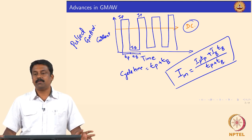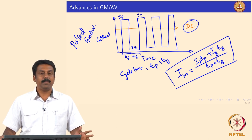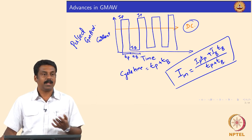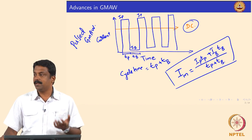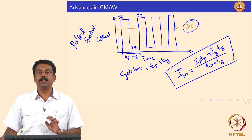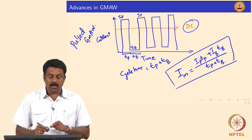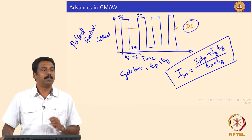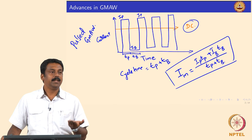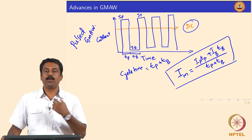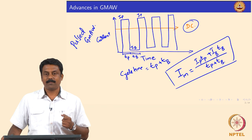Another advantage is that you minimize the damage to the base material because you are reducing heat input significantly without compromising the transfer characteristics. By carefully controlling the power source characteristics, we can achieve one drop per pulse. By carefully selecting the pulsing frequency, we can also determine how many droplets we want to detach per second.